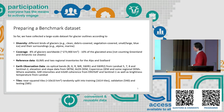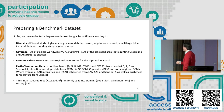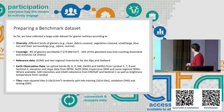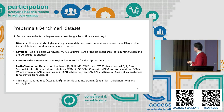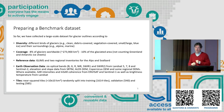As reference data we are using GLIMS and also two regional inventories for the Alps and Svalbard. We are collecting data from different satellites, including optical data mostly from Landsat satellites and Sentinel-2. We also use elevation and slope data from different sources, and SAR intensity and SAR coherence from different sensors. We have organized the data into near-square tiles of about 10 by 10 square kilometers, divided into training, validation, and testing sets.